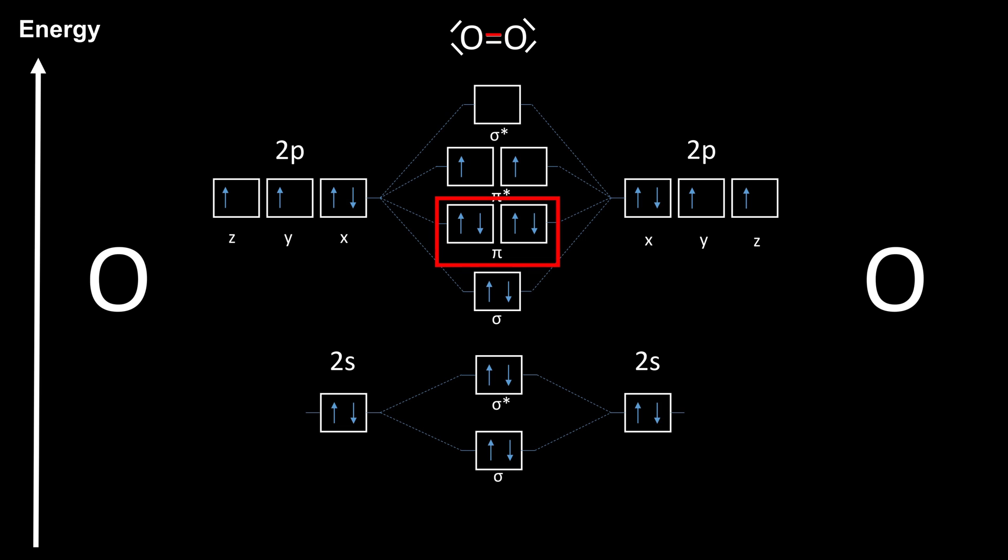The bonding pi orbitals are occupied, which would lead to a second and even a third pi bond, but in the antibonding orbitals are two unpaired electrons. These are the reason why oxygen is paramagnetic and attracted to a magnet. This also means that oxygen doesn't have a second bond in reality, but two unpaired electrons. That's why oxygen is a diradical and quite reactive.